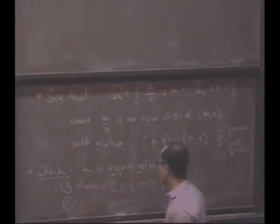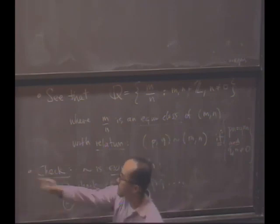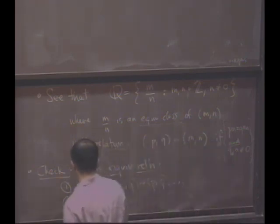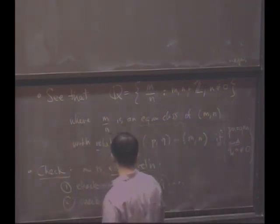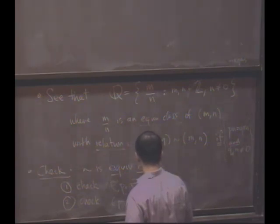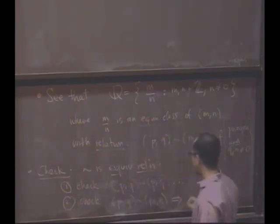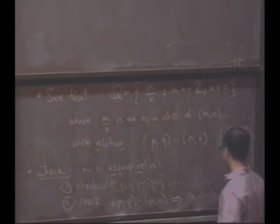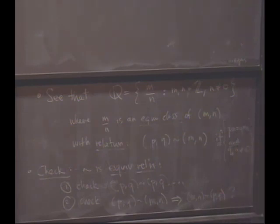What's the second thing you might check? Symmetry. Is P comma, what does that mean? If PQ tilde MN, does that imply MN tilde PQ? First of all, do you agree this is what we have to show? Good. Secondly, can you see how you'd write this out, which I won't bore you with? Yeah. This condition means.